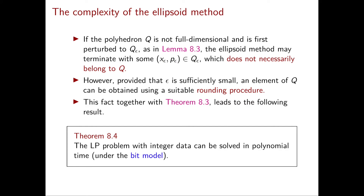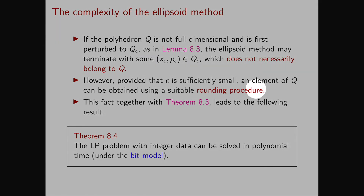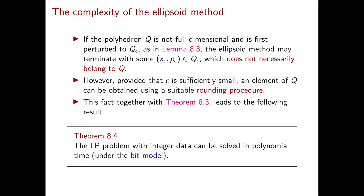This is a technical difficulty that fortunately can be solved. Since our epsilon is very small, it is possible to perturb the obtained vector in Q-Epsilon in order to obtain a vector in Q, and this can be done with a suitable rounding procedure. This fact, together with theorem 8.3, leads to the following fundamental theorem for linear programming optimization problems: the LP problem with integer data can be solved in polynomial time under the bit model using the ellipsoid method.